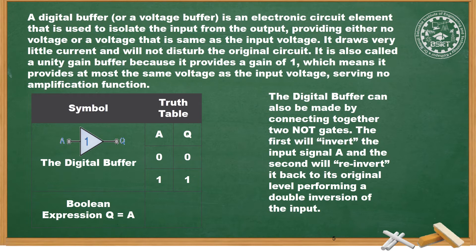We cannot always connect circuits directly. Suppose in the next stage there are multiple logic gates or another circuit — we can isolate the input side to avoid excess current draw. That is the function of the buffer: the input is passed as-is to the output side without disturbing any current or circuit. When input A is 0, output Q is 0; when A is 1, output Q is also 1. In Boolean expression: Q = A.